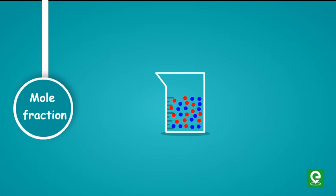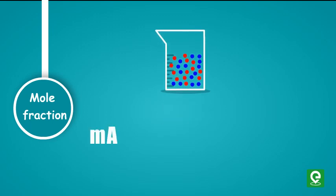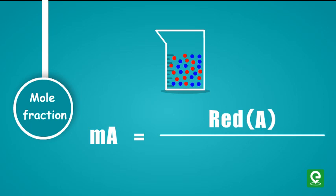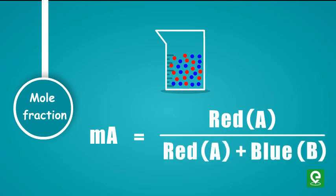The mole fraction of A is calculated as number of moles of A divided by sum of number of moles of A and B. Remembering the definition and formulae of these concentration terms will help you in easily solving stoichiometric problems.